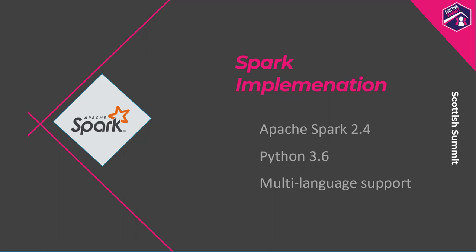They have implemented Apache Spark 2.4, which is not the latest version, but hopefully version 3.0 will be released soon. It has also implemented Python 3.6. The Spark implementation has multi-language support — it is the only version of Apache Spark that supports .NET, so if you want to write .NET code in Apache Spark, you can within Azure Synapse. It also supports Scala, Spark SQL, and Python. R is in Microsoft's development pipeline but has not yet been implemented within Apache Spark.